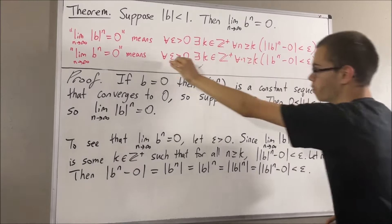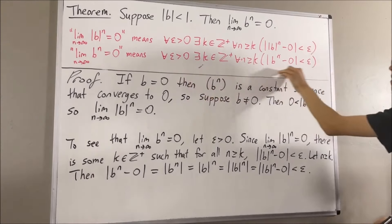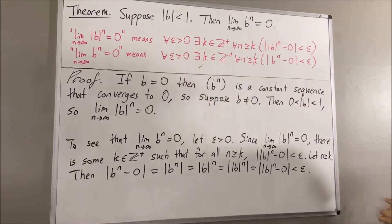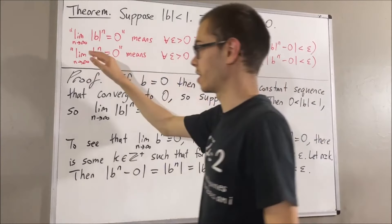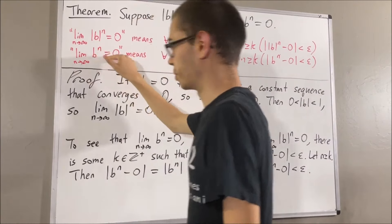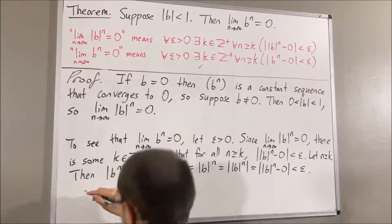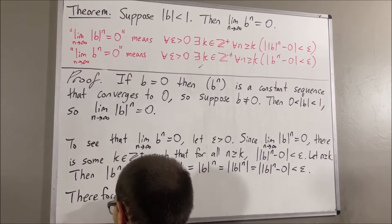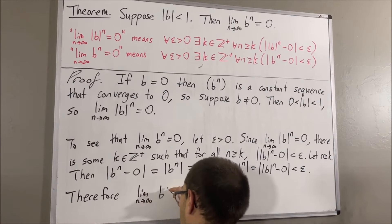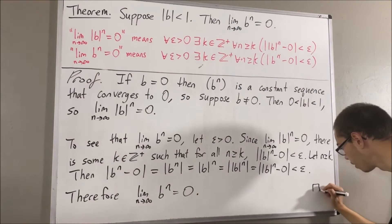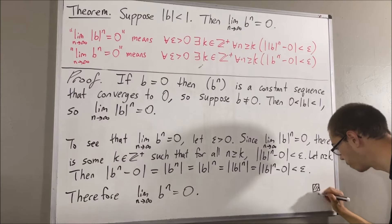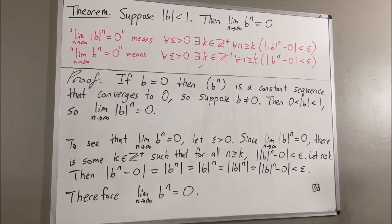So, we have proven this statement, and that proves that the limit as n approaches infinity of b to the n is equal to 0. This completes the proof. That's pretty much it for this video. Thank you.